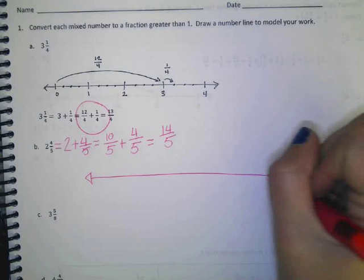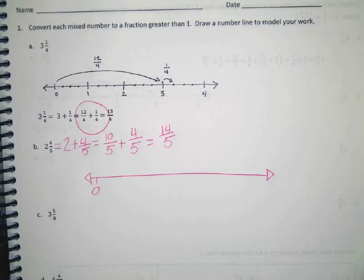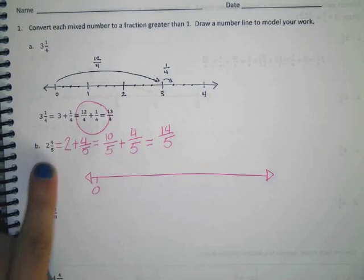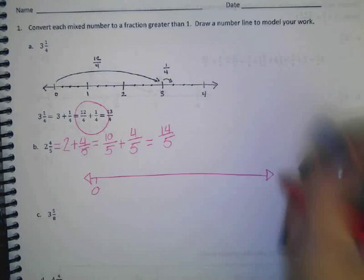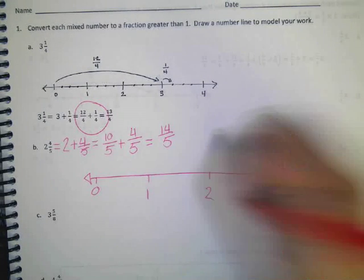It seems so easy to do it the opposite way now that we know how to do it the other way, right? Alright, so let's quickly just show on a number line. I'm going to start my number line at 0, and what should I end it at? 1, 2, 3. Because we know our biggest number is 2 and 4 fifths.